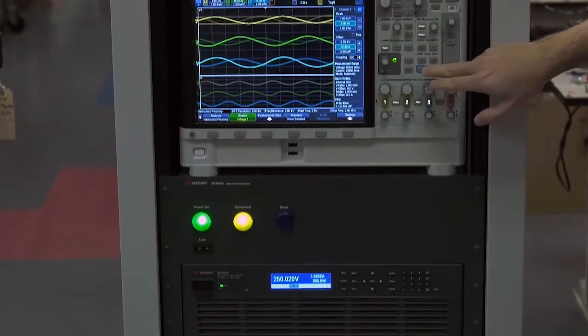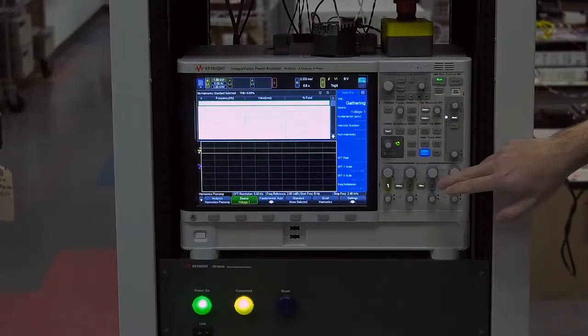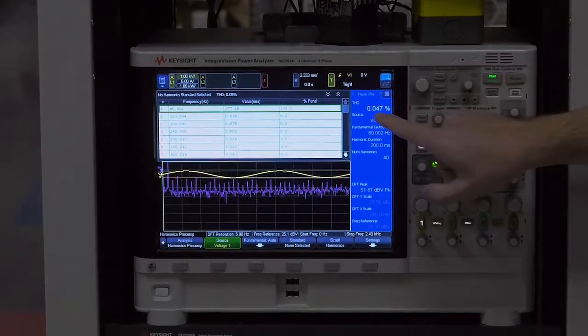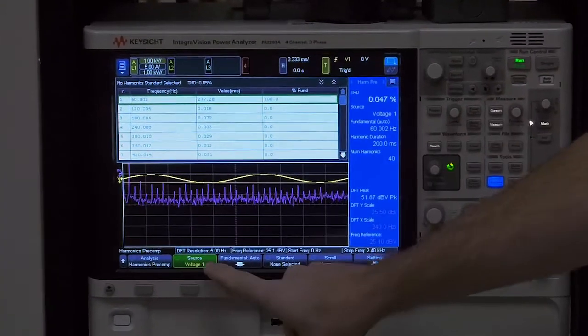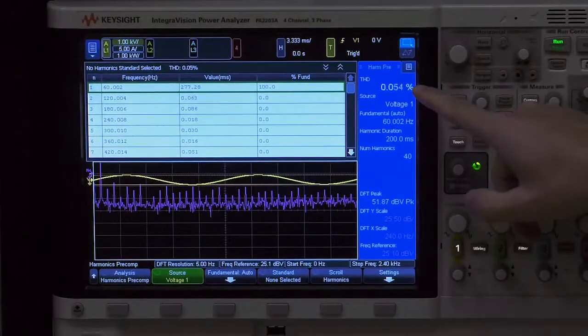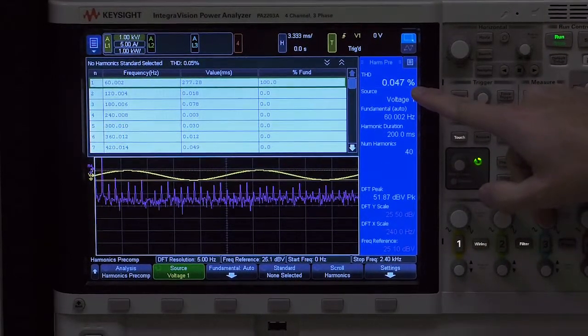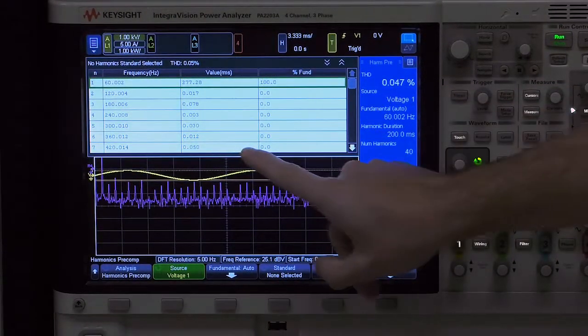We'll go back up to the power analyzer. We'll hit the analyze button. You can see the total harmonic distortion on one of the phases of voltage is extremely low at 0.05 percent. You can also see some of the harmonics.